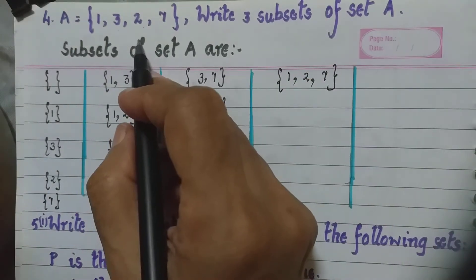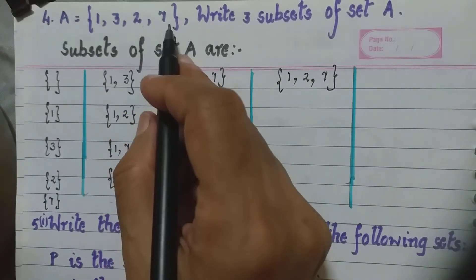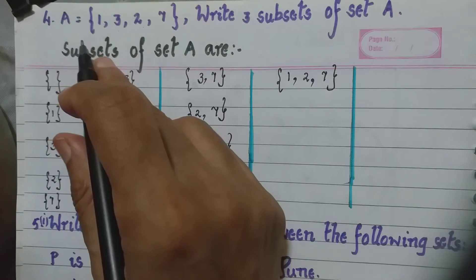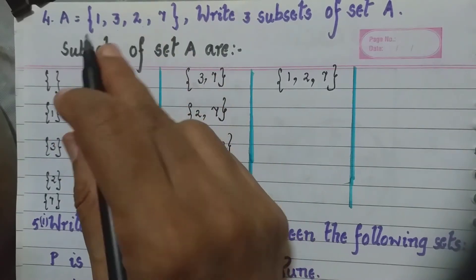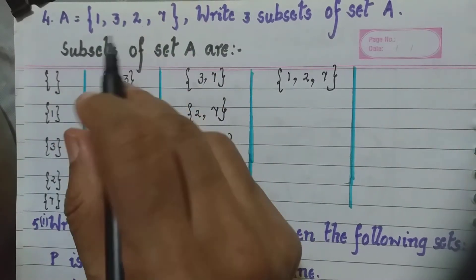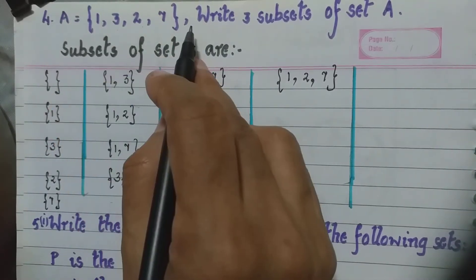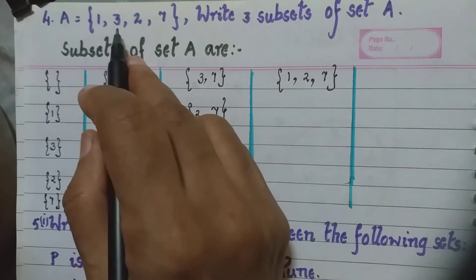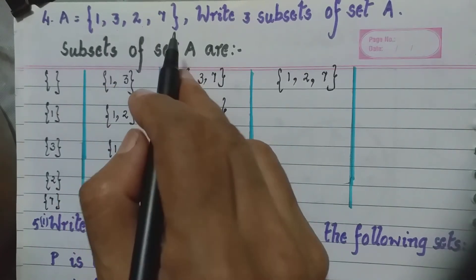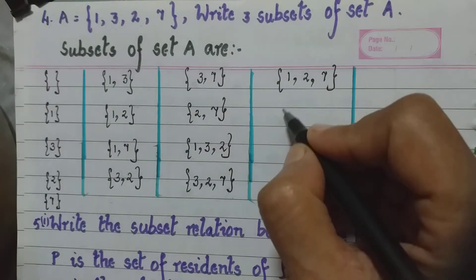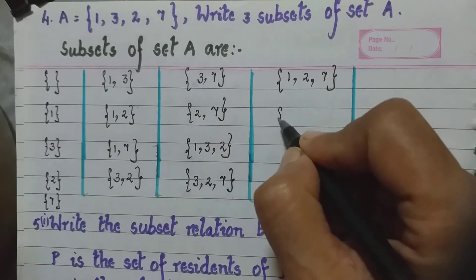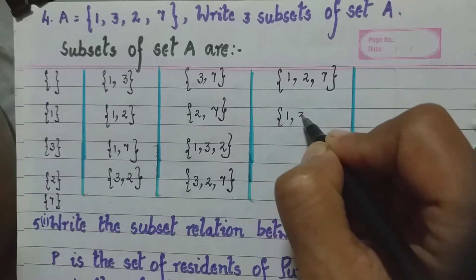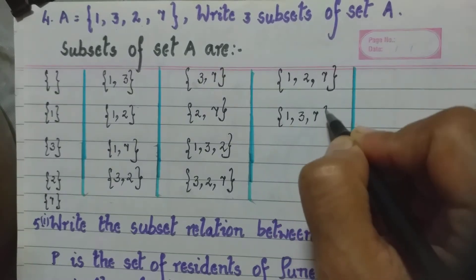Starting from 2 we are done. Now we'll take {7, 1, 3}, but we'll write it in the order as given in set A. So we write {1, 3, 7}. So we have finished with three elements at a time.